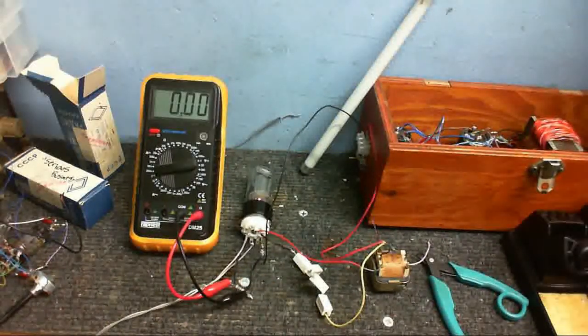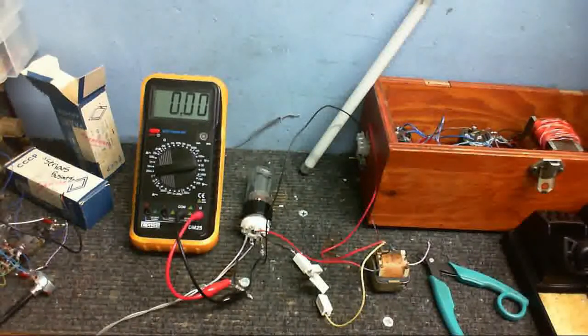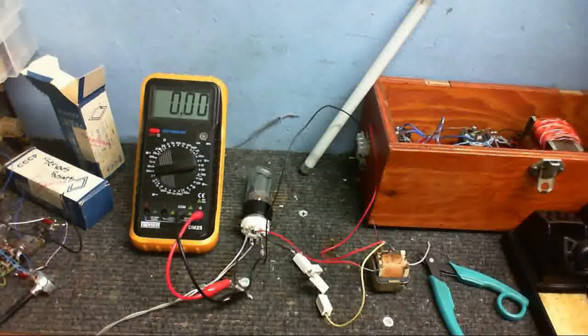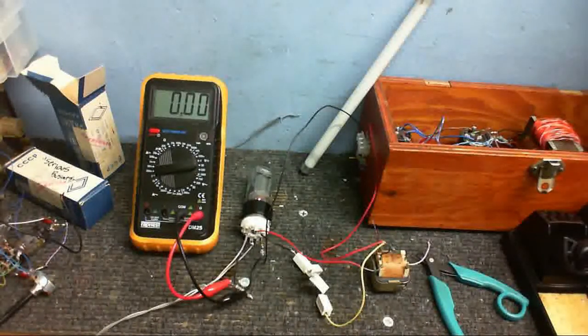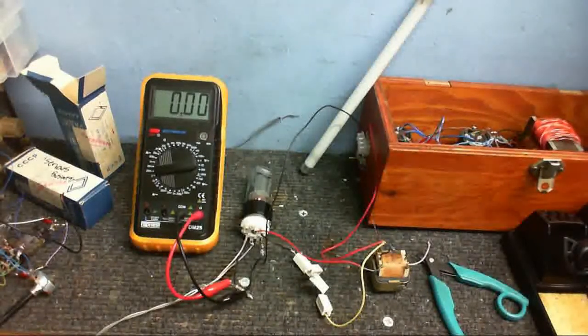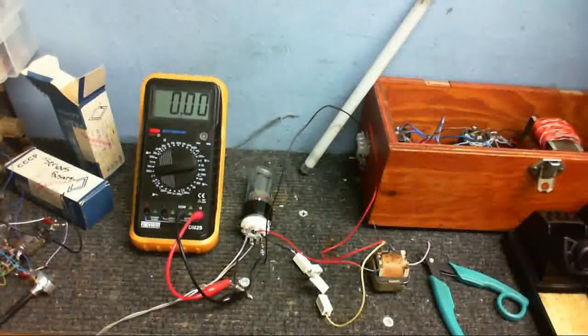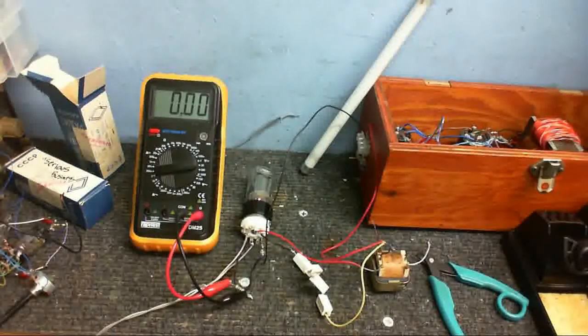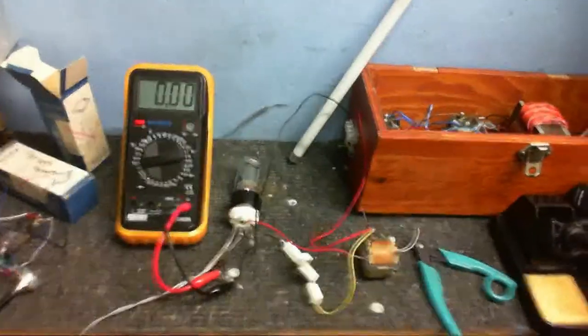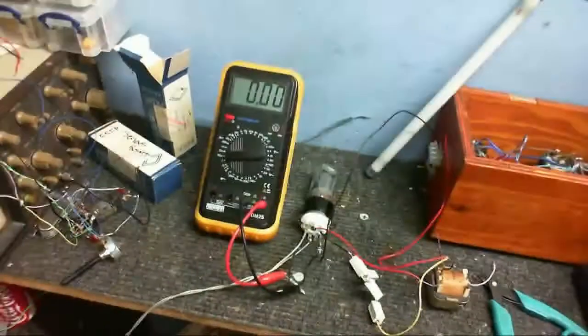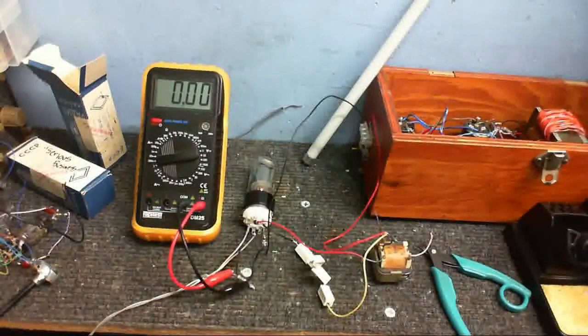I'm using a 470 ohm to connect the cathode to the ground. So I'm going to turn on the high voltage, that's plenty of time to warm up, and let's see what voltage we get across the resistor.